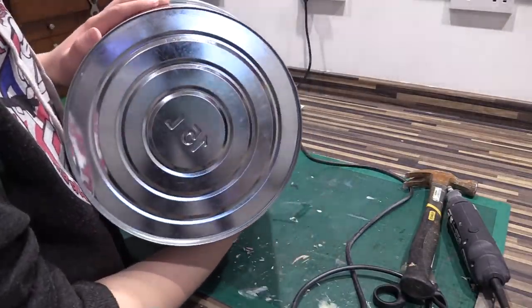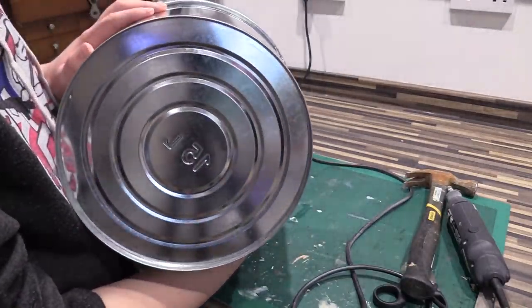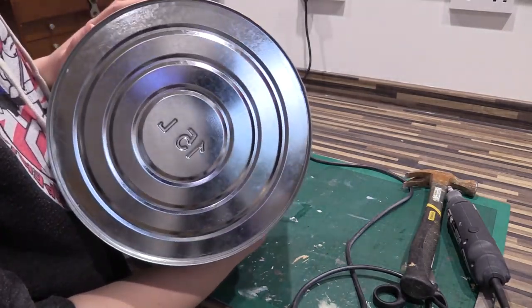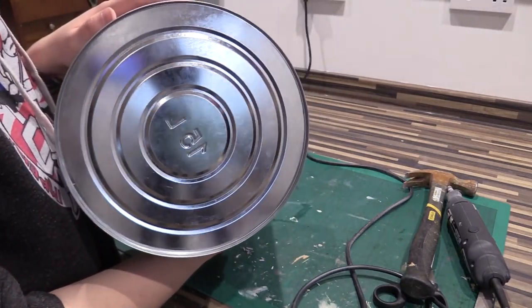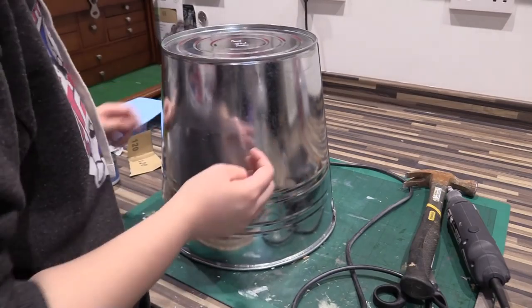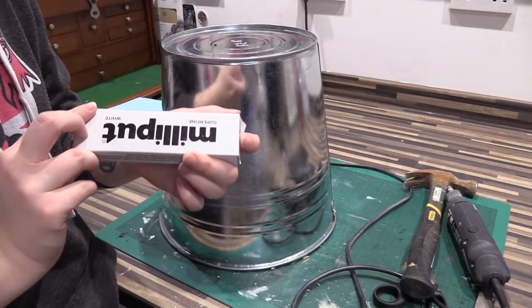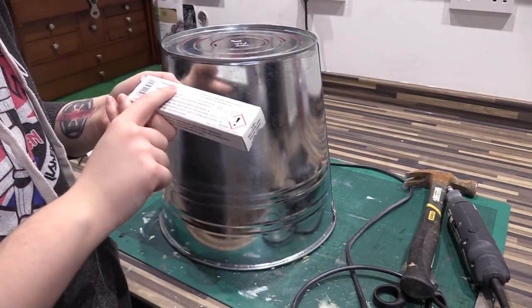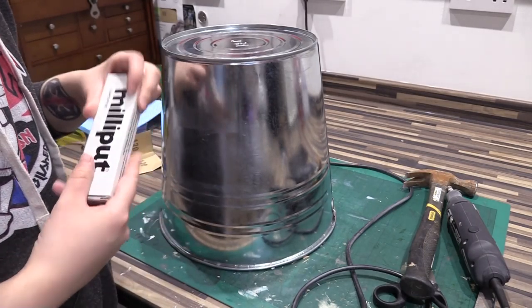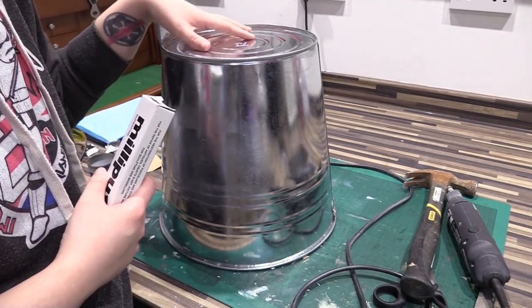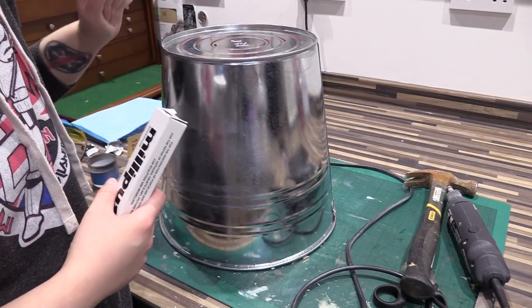Now on the very top of this bucket it's got a little indentation that says it's 15 litres and I want to get rid of that so we've just got the circles on the top. So I'm going to use some Milliput which says it's suitable for metals. I'm just going to use a little bit of Milliput just to fill in that top bit instead of having to fill it and try and sand everything.